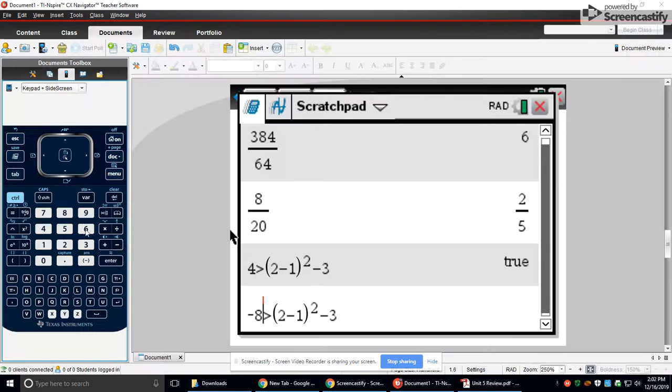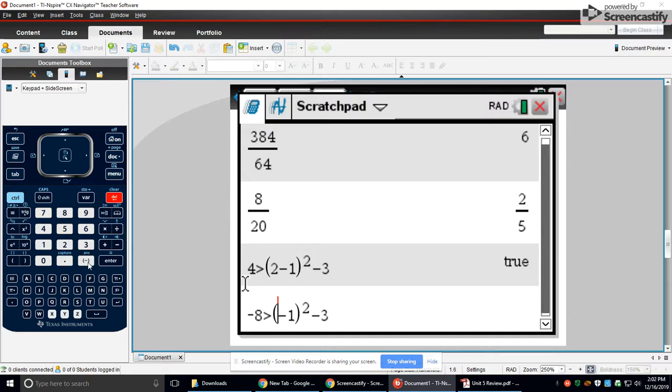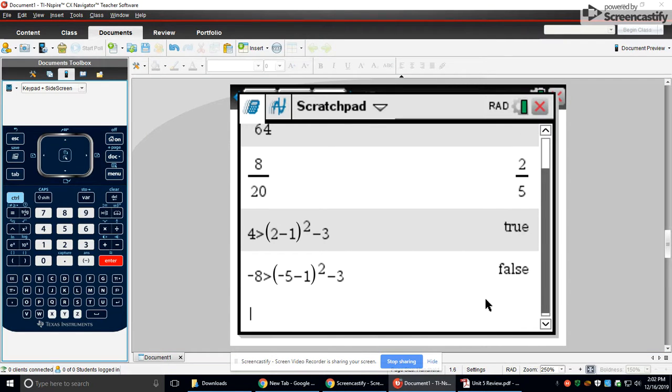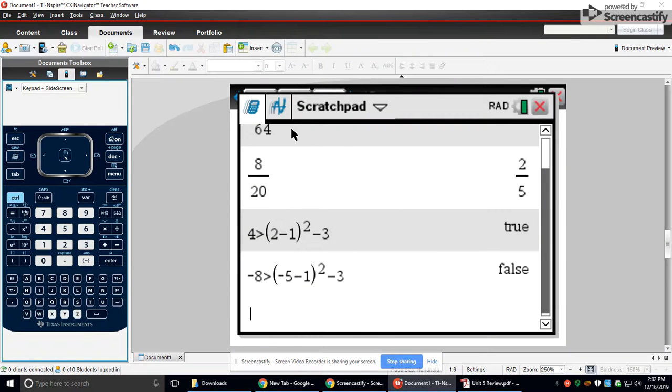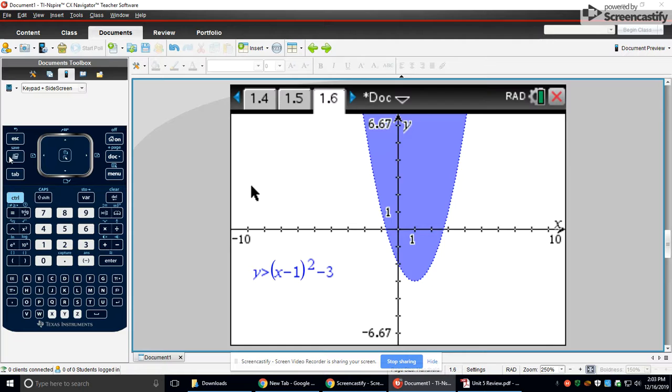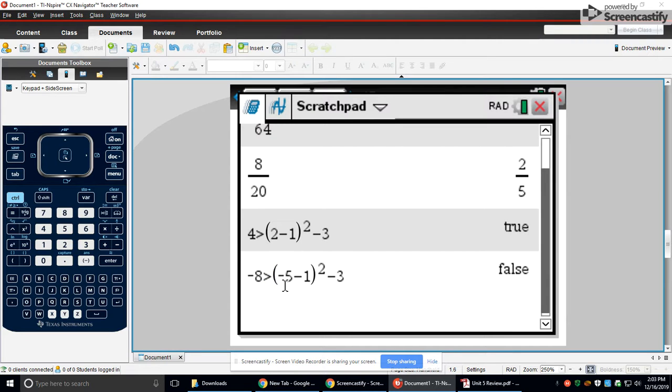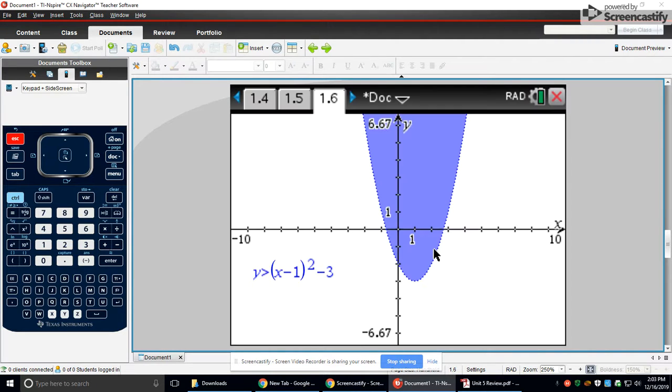All right, and then replace x with negative 5. So negative 5, that's false. See? And I put that in the not solution. So that's all there is to that. So you may want to graph it. It may help you, but you don't necessarily have to. You can just plug in the coordinates into the inequality to see if it's true or false.